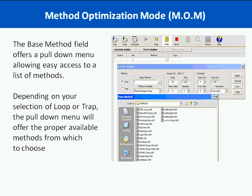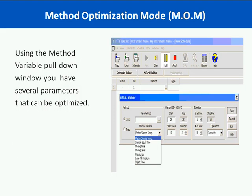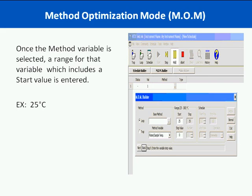A pull-down menu for each field is going to walk you through the steps of the schedule building process. Depending on whether you're running static or dynamic mode, the appropriate methods — which can be your default methods or any previously developed methods — are made available for you to choose from. Using the method variable pull-down window, you have several parameters you can now optimize. This is an example of the loop method builder where you can vary method variables such as platen sample temperature, sample equilibration time, your mixing time or mixing level, your pressurize time, your loop fill pressure, and even your injection time.